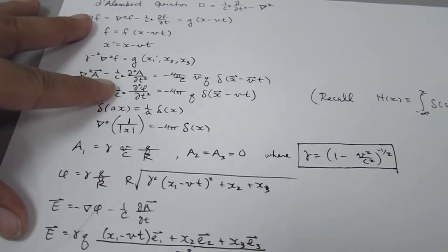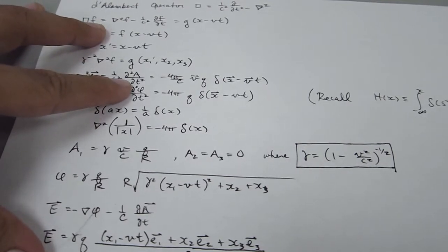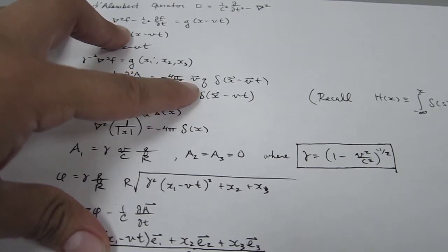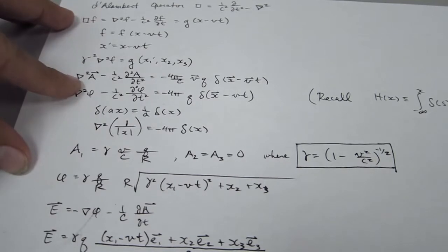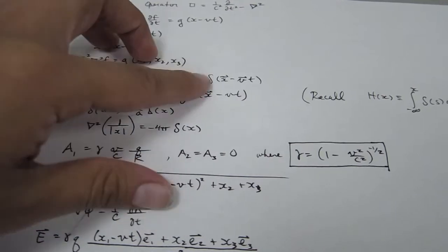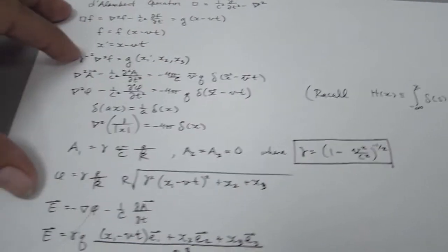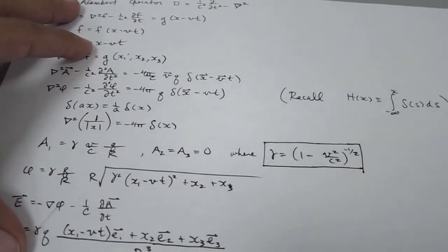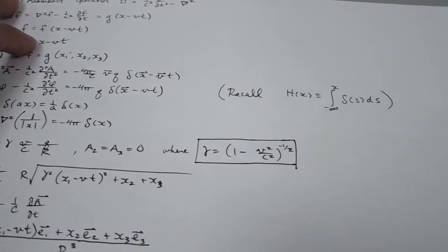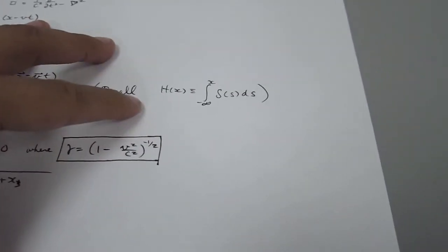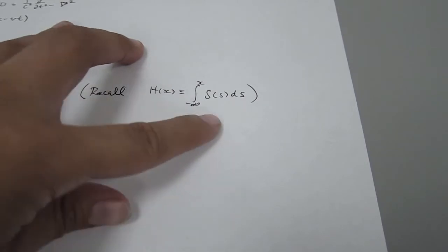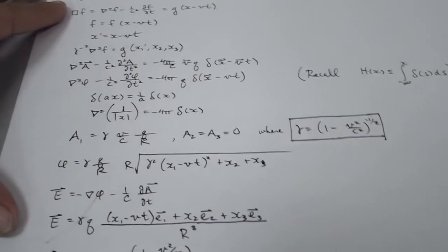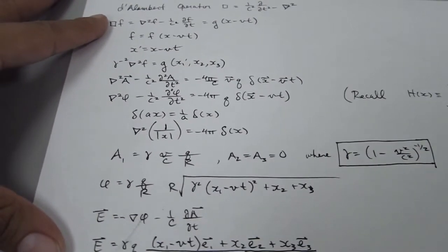Back to the vector potential: the Laplacian of the vector potential minus 1 over c-squared times the second time derivative of the potential gives minus 4pi over c, and the current density is the charge q times its velocity. Hopefully you recall the relationship between the Laplacian and the delta function. You might say, 'Paul Dirac wasn't even born' — and no, he was not. But recall the Heaviside step function, which is related to the delta function: this integral across the interval is the Heaviside function. So Heaviside did know about the delta function before Paul Dirac.